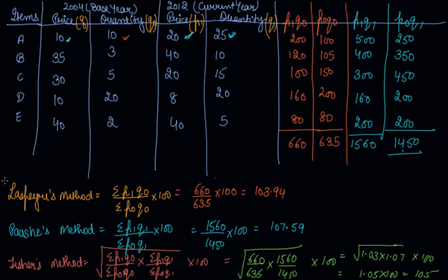In this way we find the weighted index number using the weighted aggregative method — that is Laspeyres, Paasche's, and Fisher's methods. These three methods are very important to remember because you will definitely get one question in the exam. I hope you liked our video. Please download our Scholars Learning app and enjoy the learning experience with us. Thank you.